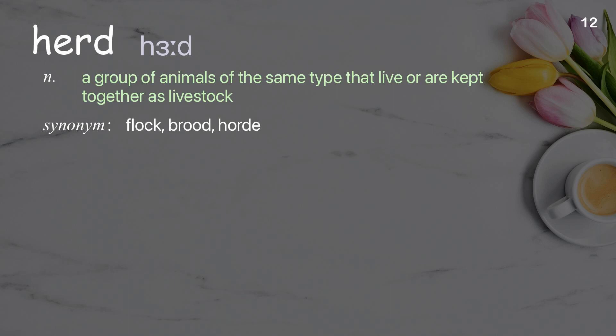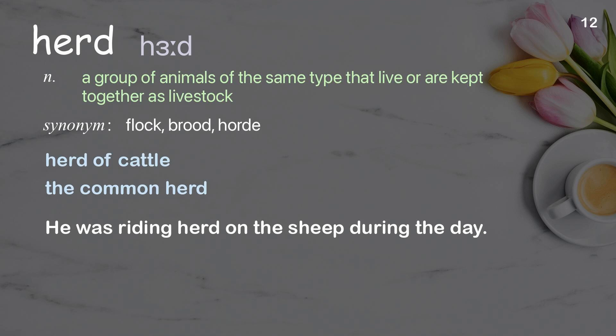Herd: a group of animals of the same type that live or are kept together as livestock. Examples: herd of cattle; the common herd. He was riding herd on the sheep during the day.